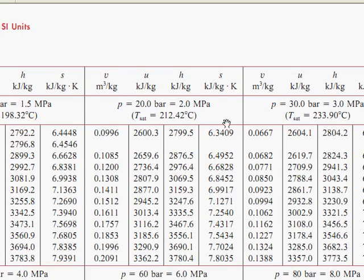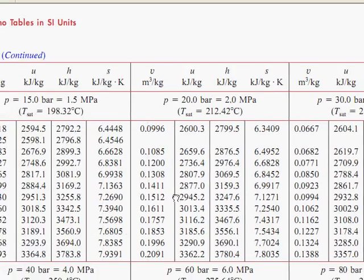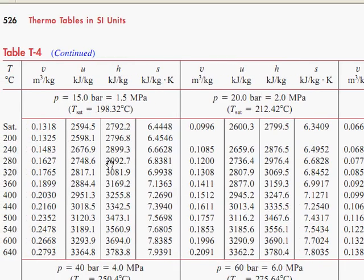Also, luckily for us, there's a row in that table for exactly 240 degrees Celsius. So finding our final answer is very easy, then. We're looking for internal energy, which is lowercase u. Specific internal energy, that is. And the answer is right here in the table, 2659.6 kilojoules per kilogram.